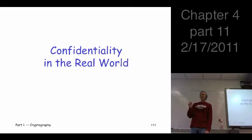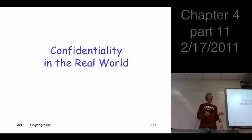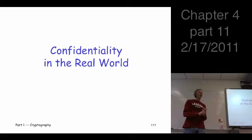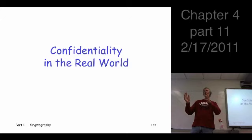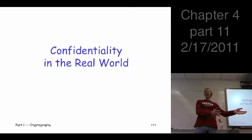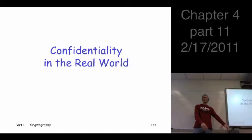Confidentiality in the real world: we have two very different ways to provide confidentiality — symmetric ciphers and public key systems. What should we use? What's the advantage of a symmetric cipher over a public key system? It's much faster — orders of magnitude faster, something on the order of a thousand times faster. You encrypt a thousand times more data for the same computational effort with a symmetric cipher as you can with a public key system. So why would we ever use public key systems for encrypting data?